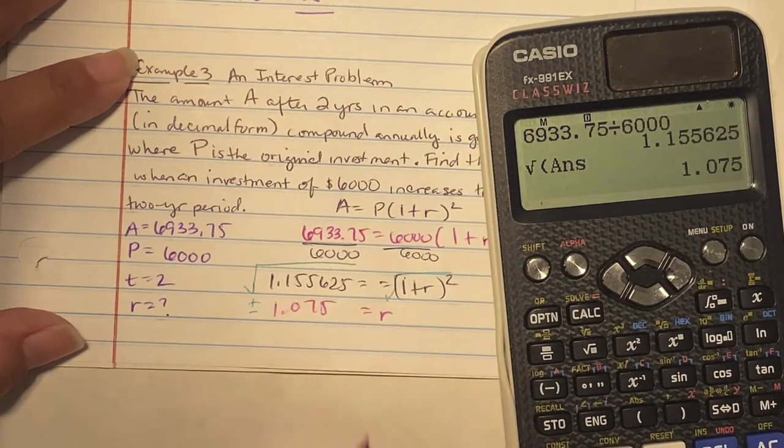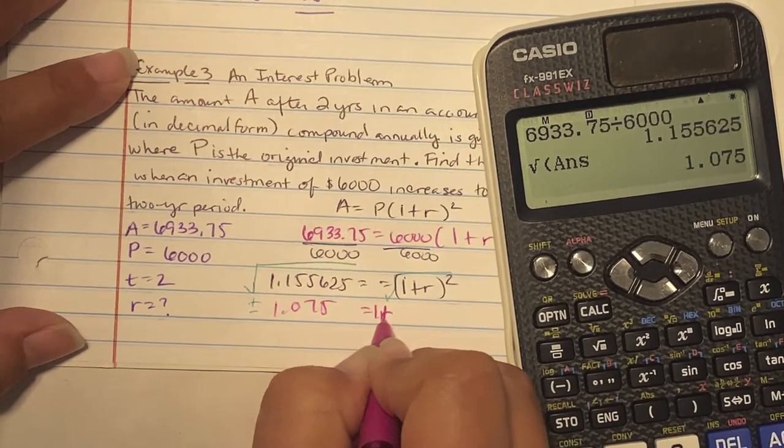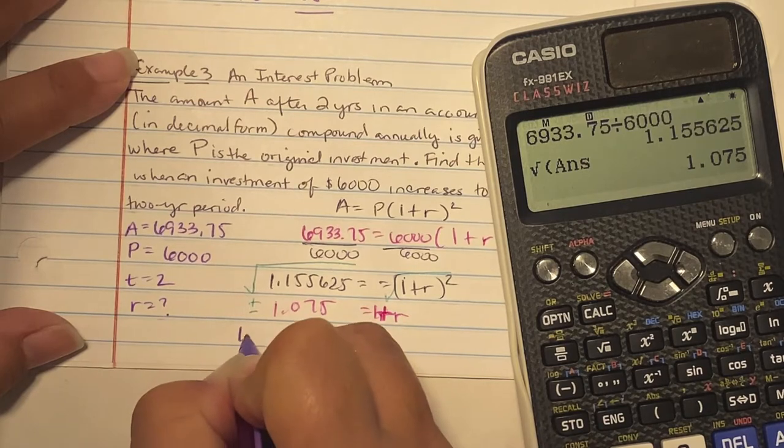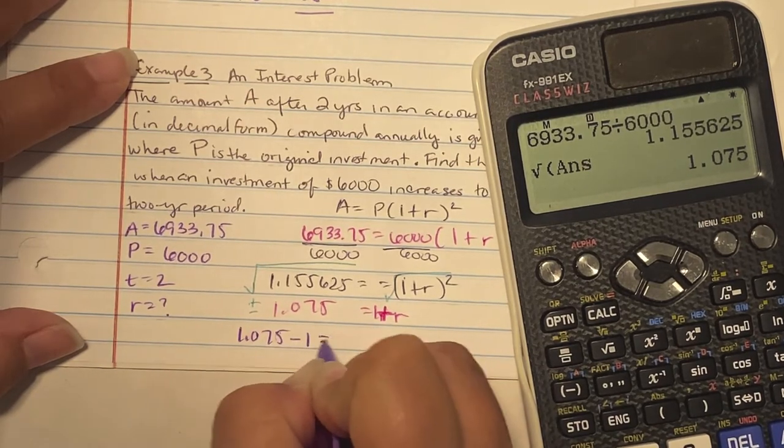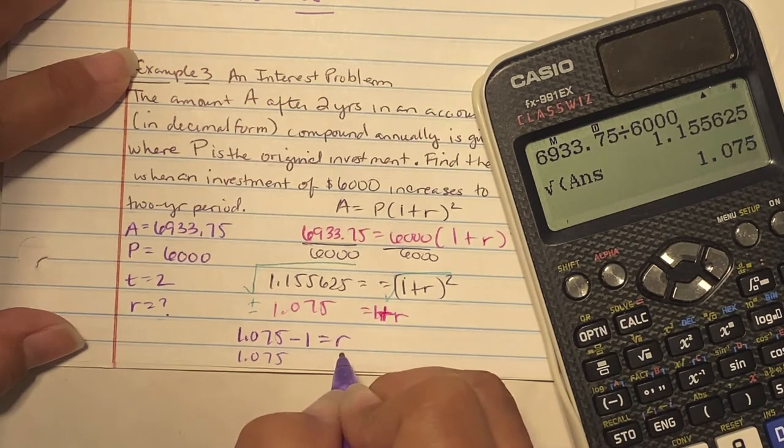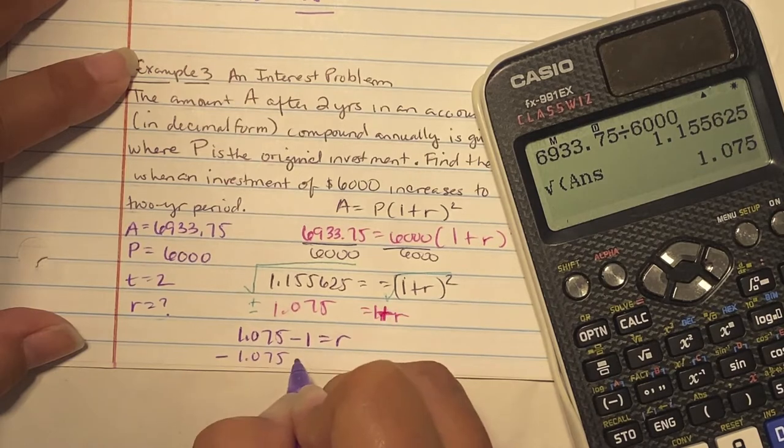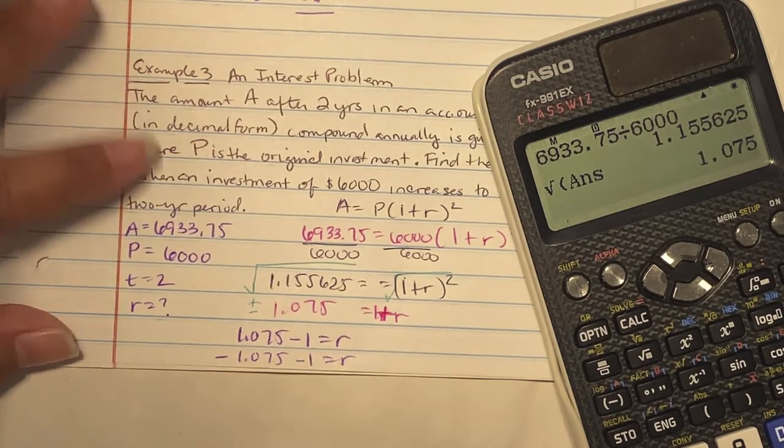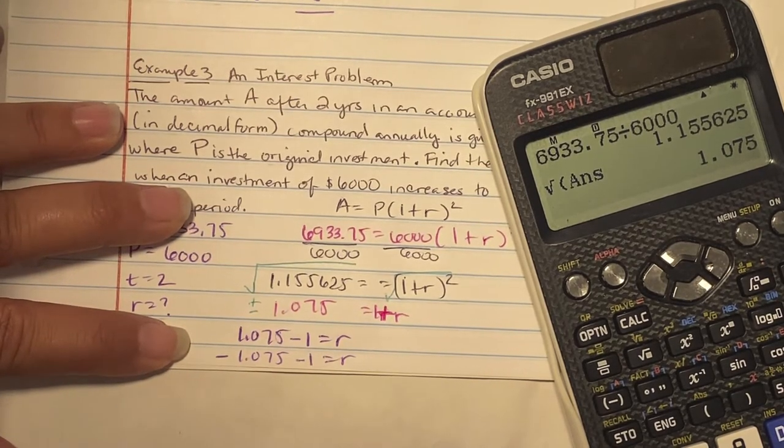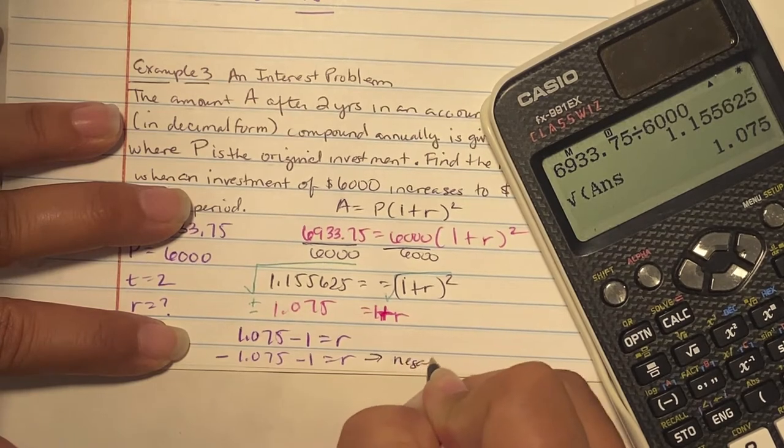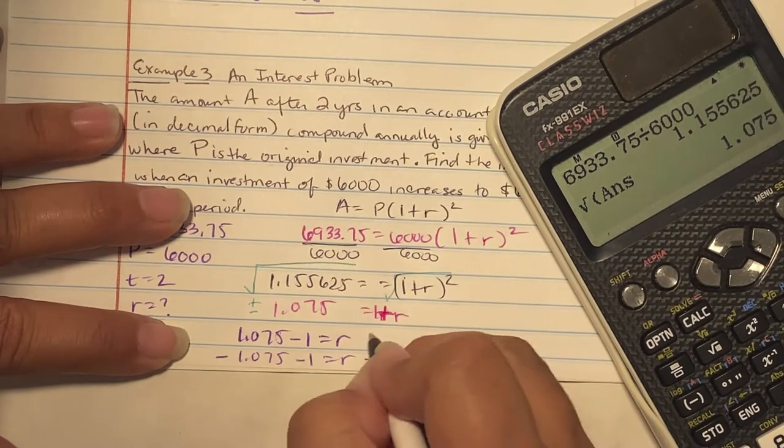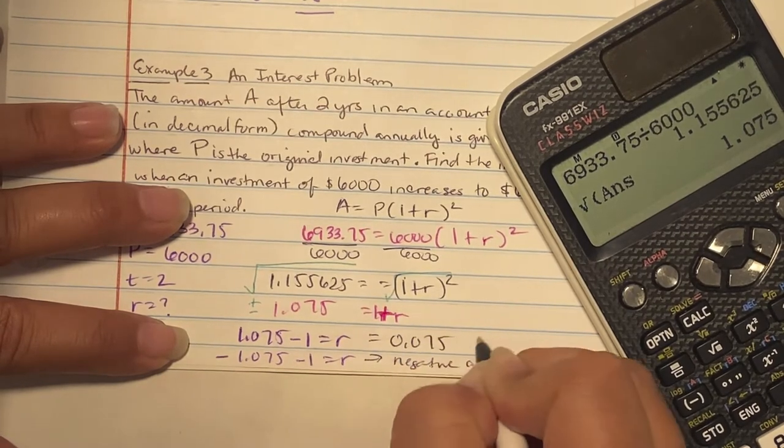So we get 1.075 equals one plus R. Then subtract one over. It's a plus minus situation. The problem is this one results in a negative answer, so we can't use it. This one gives me a rate of 0.075, which is 7.5%, the one I want.